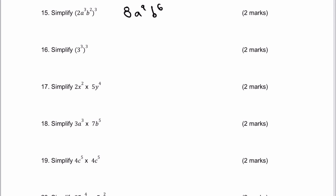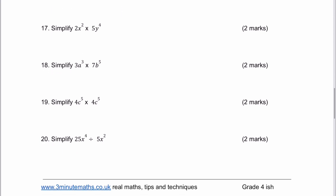Number 16: 3 to the power of 3 to the power of 3 is going to be 3 to the power of 9. If it's a letter, it's exactly the same as a number — you treat it in exactly the same way. Question 17 is another version: 2 times 5 is going to be 10, then we've got x to the 2 — we're not multiplying that by anything so we leave it as is — and y to the 4.